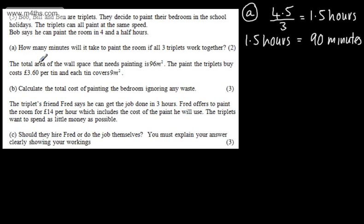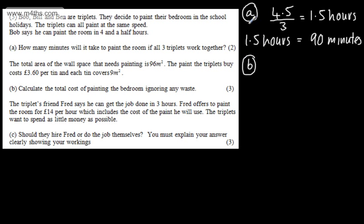We're now told the total area of the wall space that needs painting is 96 square metres. The paint the triplets buy costs £3.60 per tin, and each tin covers 9 metres squared. In part B, for three marks, we're asked to calculate the total cost of painting the bedroom, ignoring any waste.